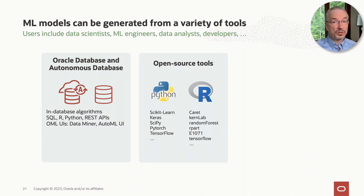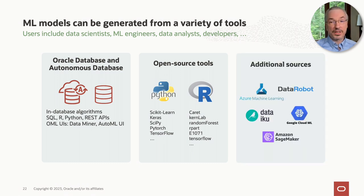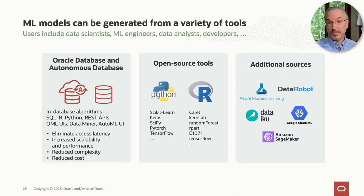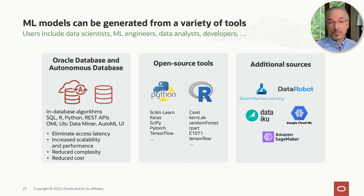Open source tools like Python and R, along with their rich ecosystems of third-party packages, are popular options. But when your data is principally in the database, Oracle Database and Autonomous Database offer advantages: eliminating access latency since there's no need to extract data, scalability and performance with memory optimizations and distributed parallel processing, reduced complexity by eliminating the need to manage additional tools separately, and reduced cost — machine learning is included with your database license or subscription.